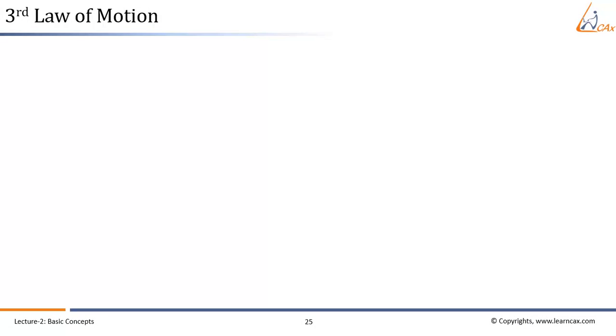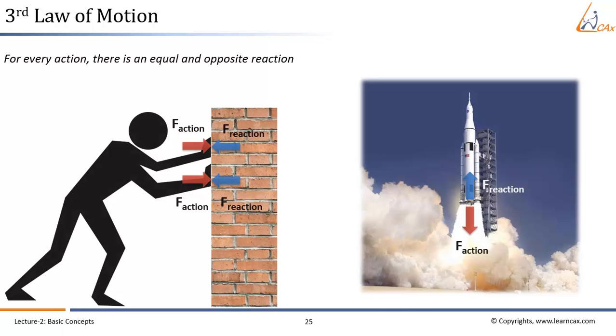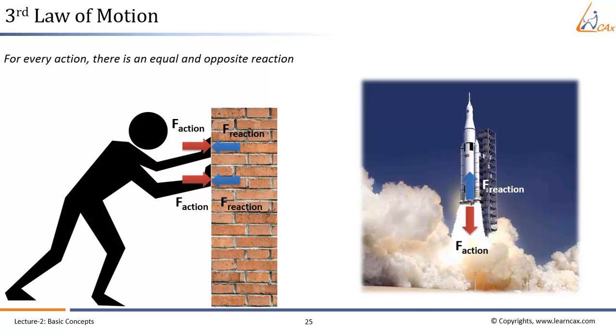Moving on to the third law of motion which says, for every action, there is an equal and opposite reaction. The statement means is that, in every interaction, there is a pair of forces acting on the two interacting objects. The size of the forces on the first object equals the size of the force on the second object. The direction of the force on the first object is opposite to the direction of the force on the second object.